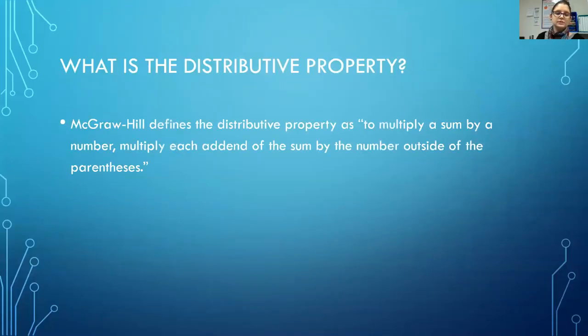According to the textbook McGraw-Hill, it defines the distributive property as to multiply a sum by a number, multiply each of the addends of the sum, so the two numbers being added, by the number outside of the parentheses.